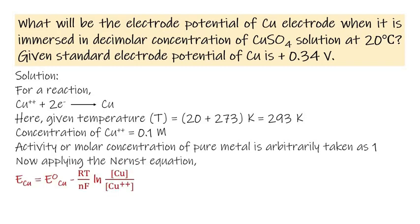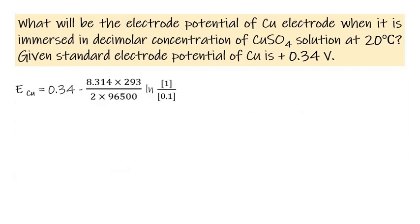Now applying the Nernst equation, E_Cu = E°_Cu - (RT/nF) ln [Cu]/[Cu²⁺] = 0.34 - (8.314 × 293)/(2 × 96500) ln (1/0.1).